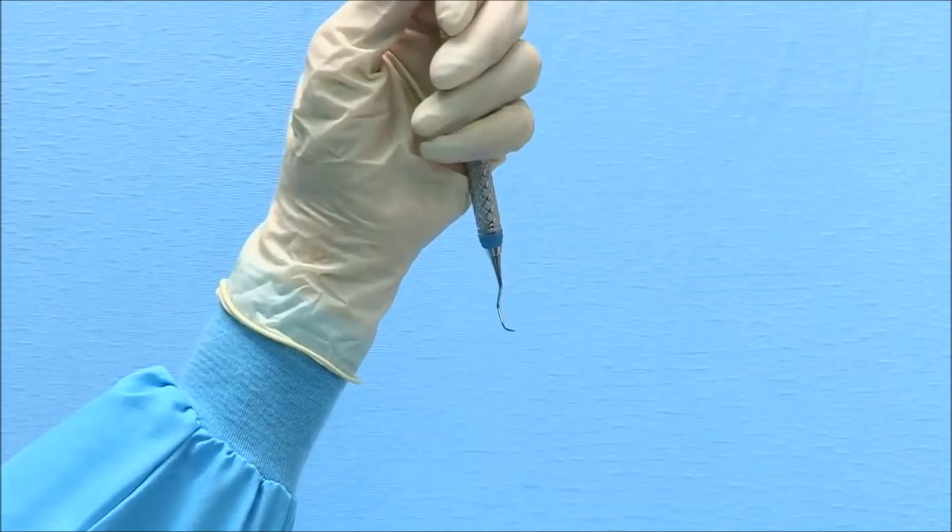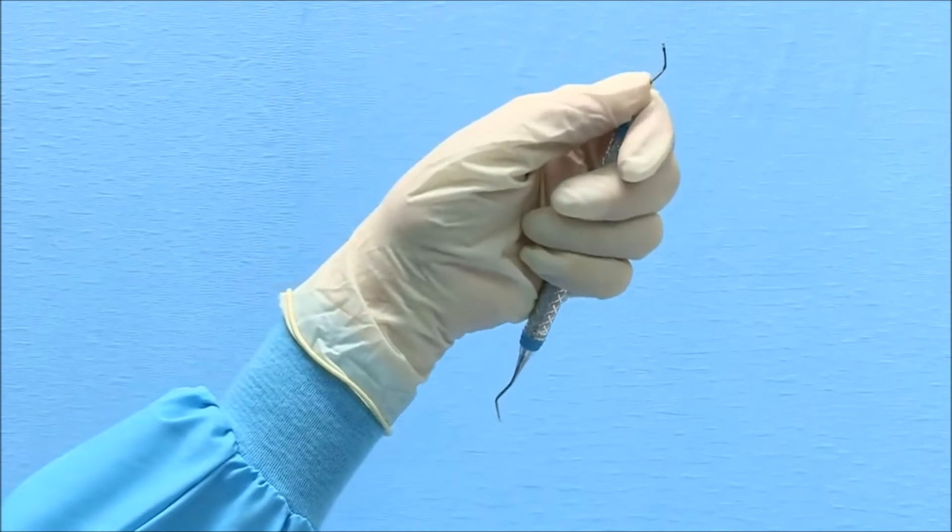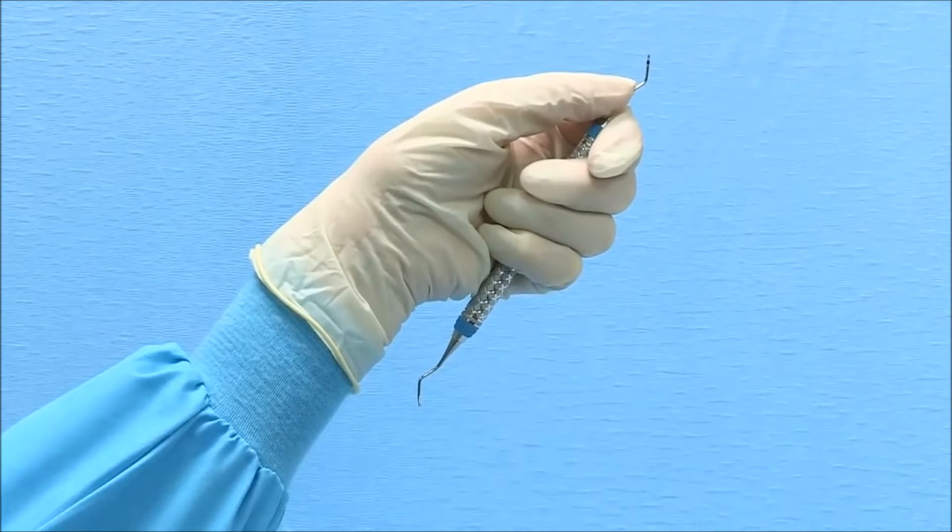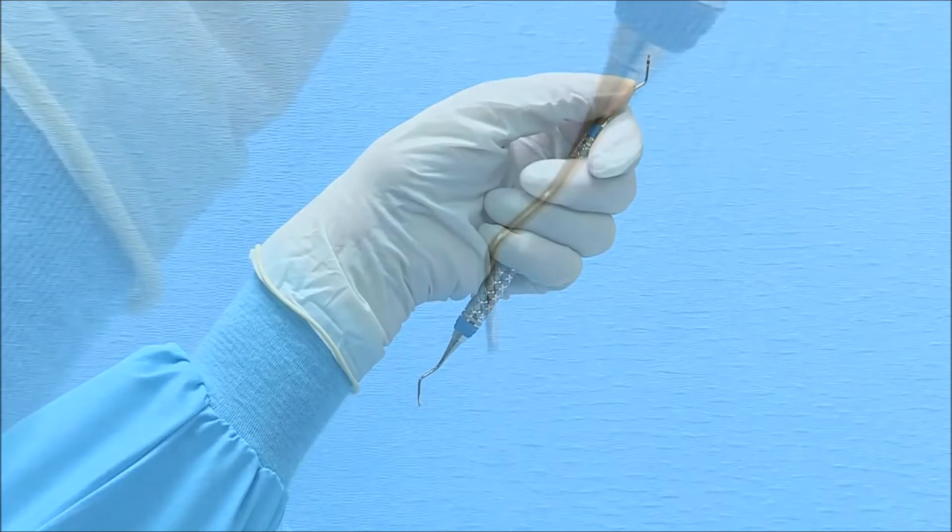To sharpen the opposite cutting edge, rotate the instrument so that the toe is pointed away from you. Maintain the secure palm grasp and brace the top shank with your thumb with your elbow on the table in front of you.